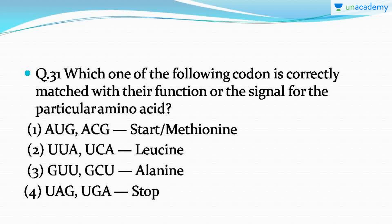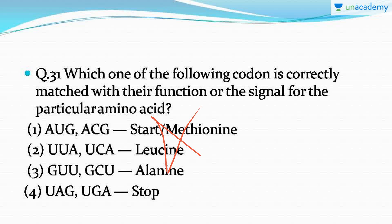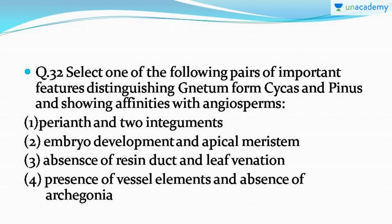Question number 31 is a very easy question: which one of the following codons is correctly matched with its function or signal for a particular amino acid? The correct answer is option number four. UAG and UGA are stop codons — the three stop codons are UAG, UGA, and UAA. Just remember these; it's a very important point.